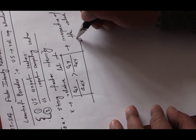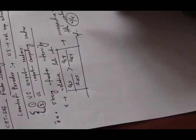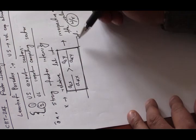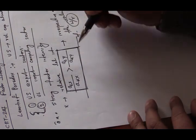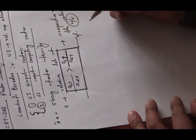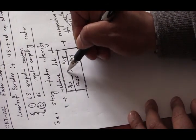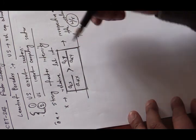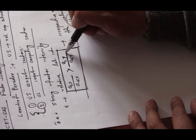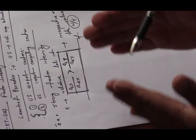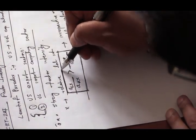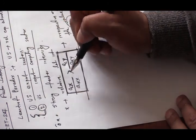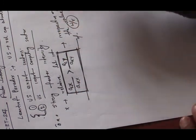This condition must hold irrespective of the value of the factor price ratio. That means no matter what the factor price ratio is, the labor per unit of capital required to produce one unit of X will always be greater than labor per unit of capital required to produce one unit of Y. So the production function of X is always biased towards labor, and the production function of Y is relatively biased towards capital.